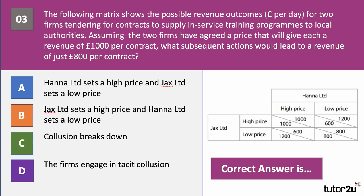Question three: the matrix shows possible revenue outcomes for two firms tendering for training programme contracts to local authorities. Having agreed a collusive price giving each £1,000 per contract, what action leads to revenue of just £800 per contract? The correct answer is C — collusion breaks down. Instead of maintaining the collusive high price, firms start vigorously competing for contracts. Collusion is typically found in the top left of a game theory matrix; profits fall when it breaks down.